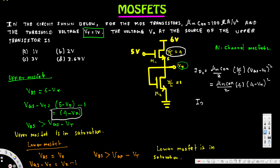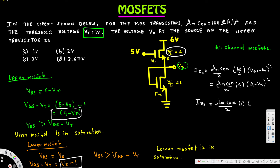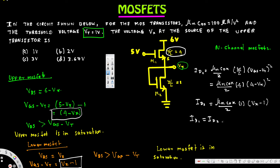For the lower MOSFET, W/L equals 1 and VGS minus Vt equals Vx minus 1, so ID2 equals (μnCox / 2) × 1 × (Vx minus 1) squared. Since the two MOSFETs are in series, ID1 equals ID2, so we equate these two expressions.